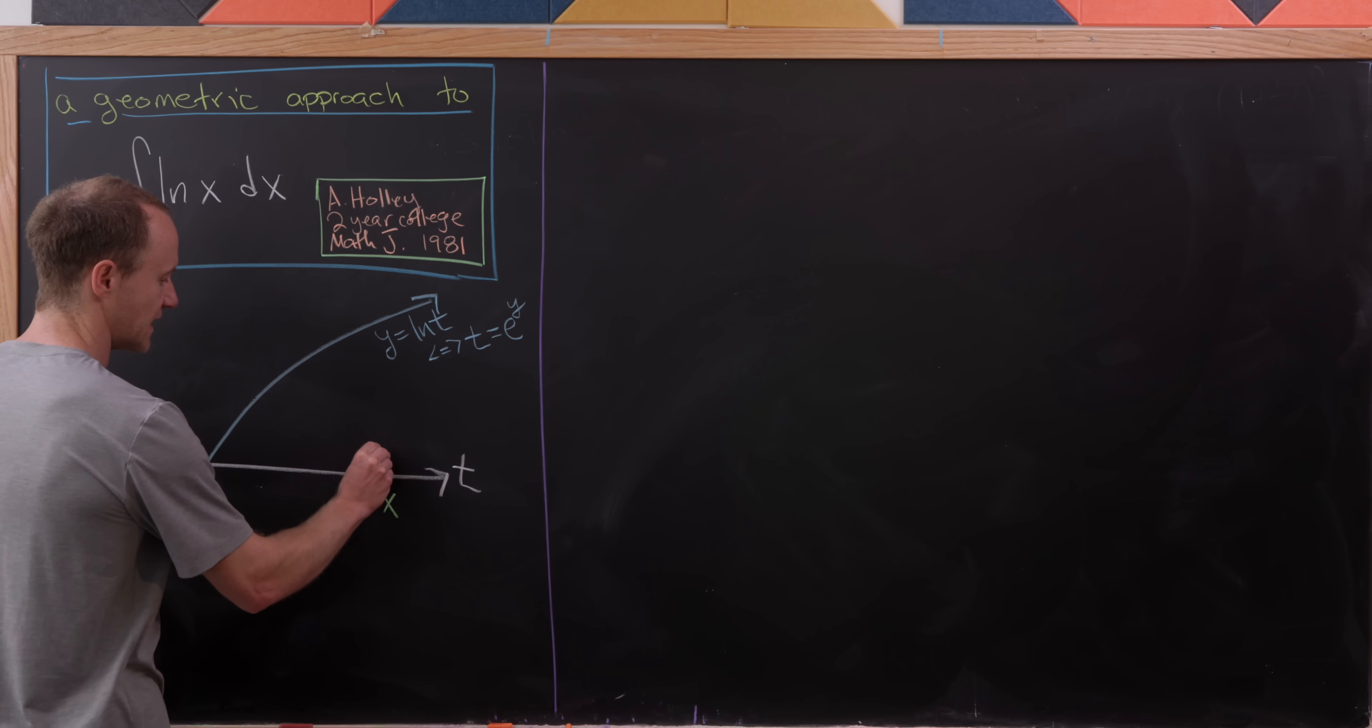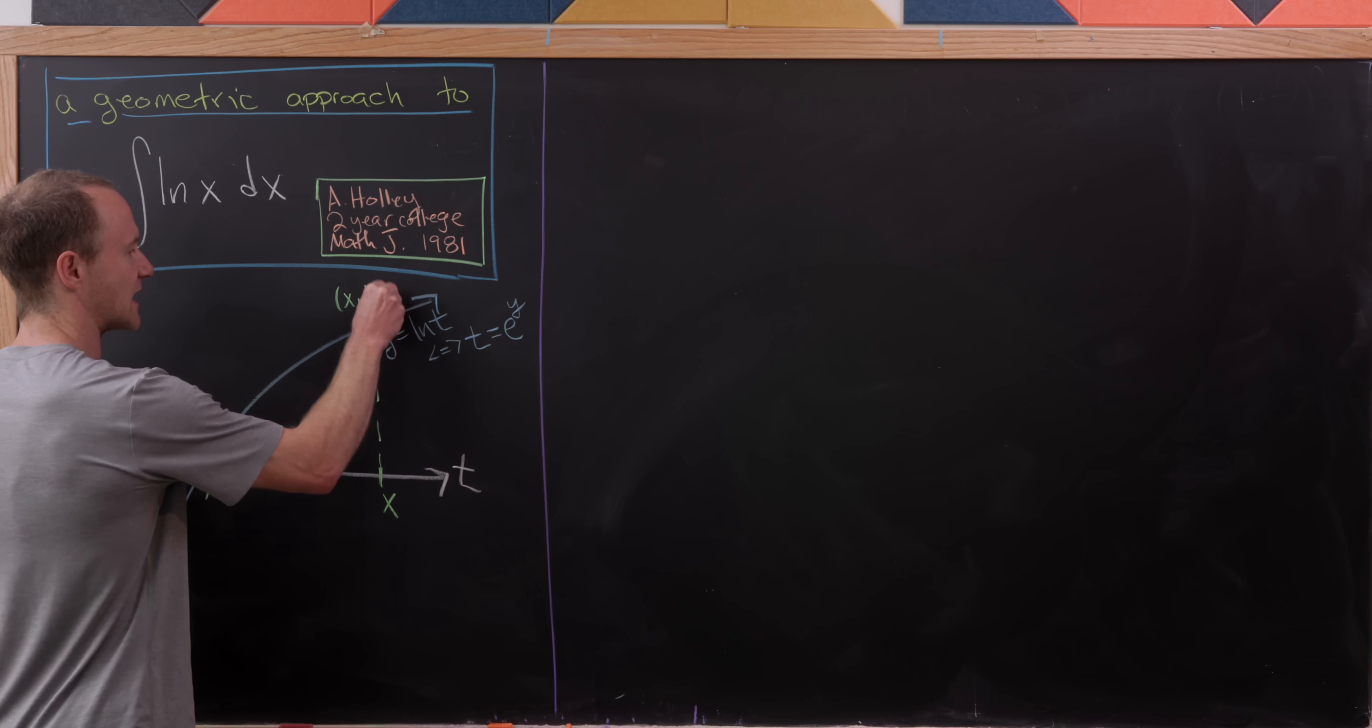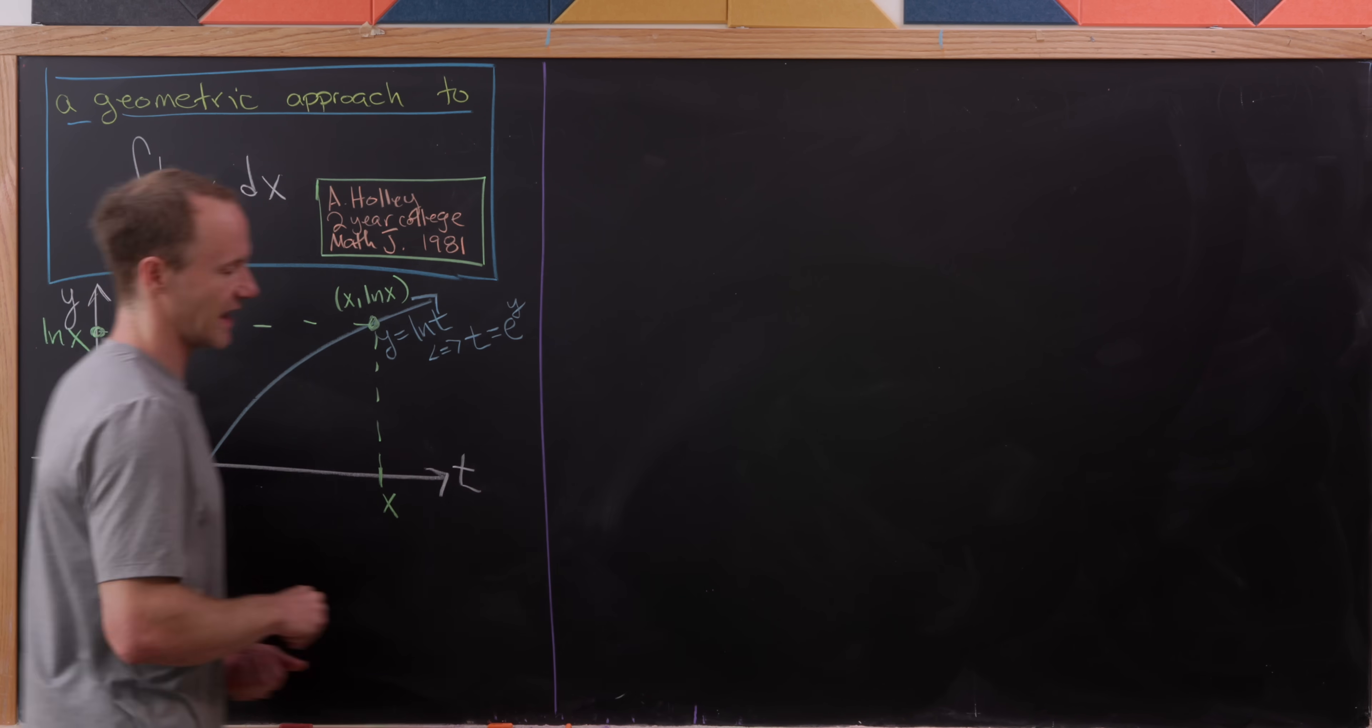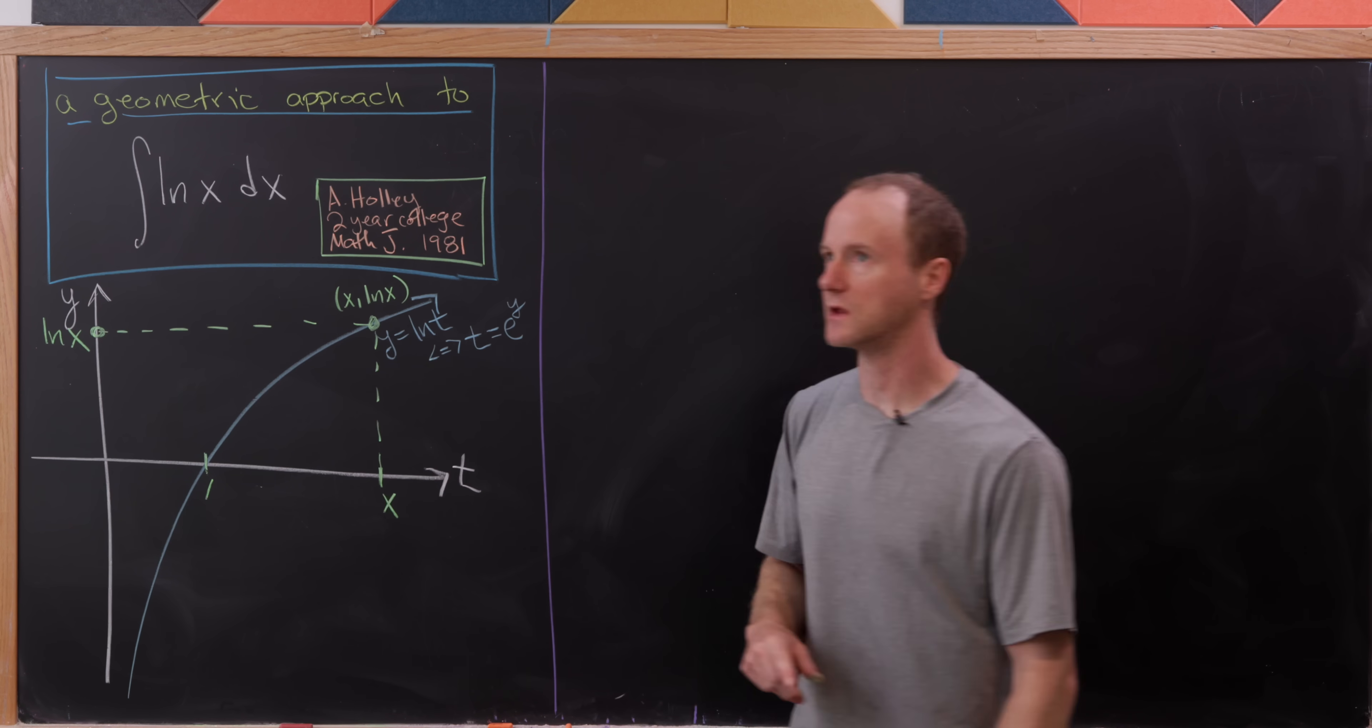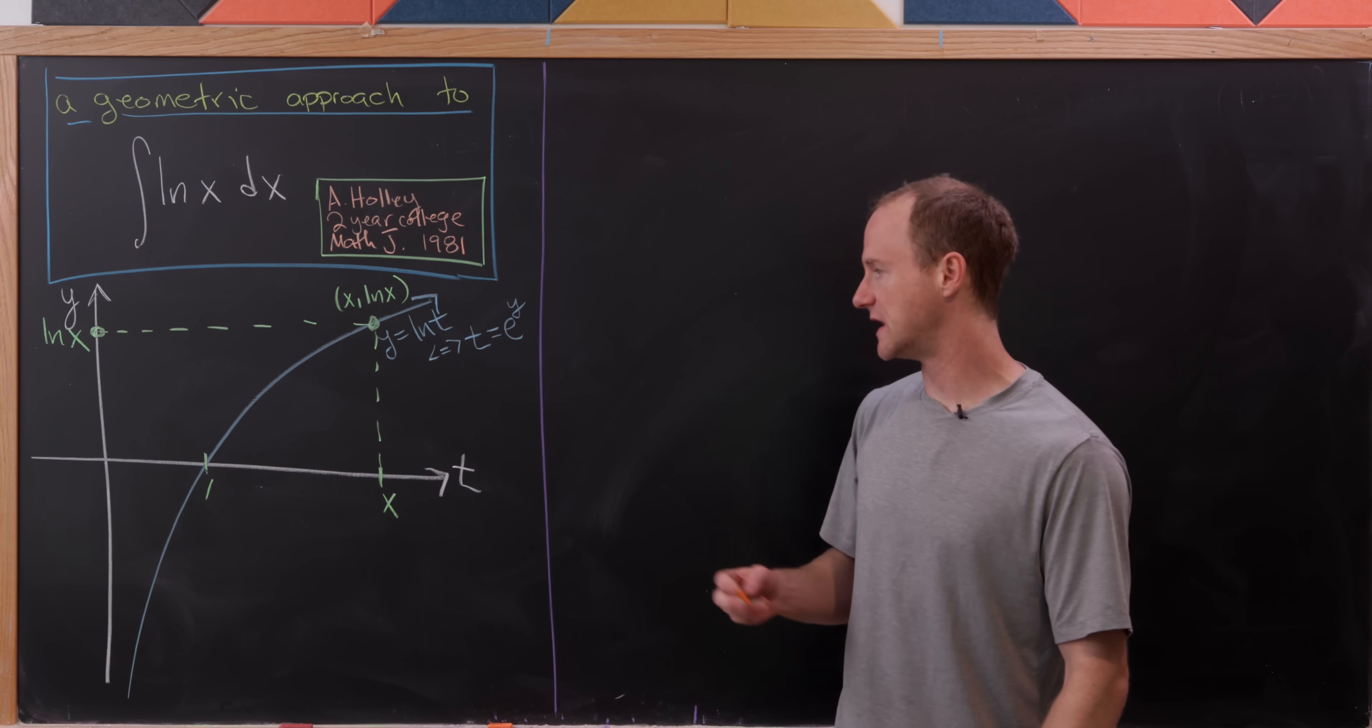And let's observe that if we go up here, this is obviously the point (x, natural log of x), just based off the fact that we are along that curve y equals natural log of t. That means that this point along the y-axis is the point natural log of x. So we've got a rectangle in the first quadrant that's been naturally broken into two pieces.